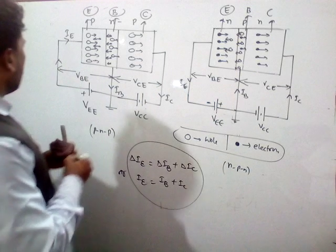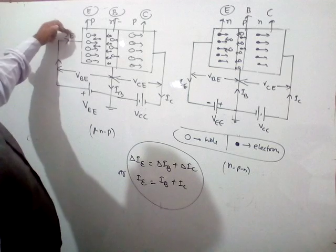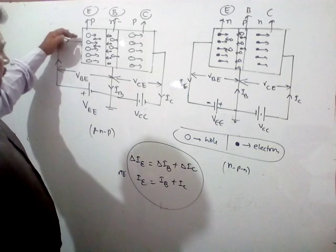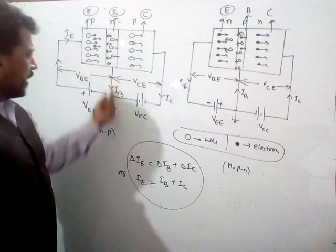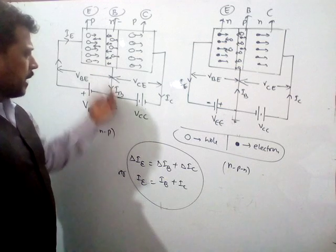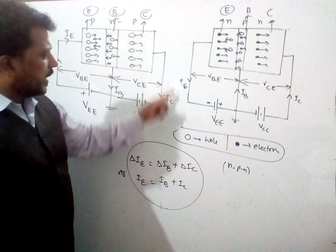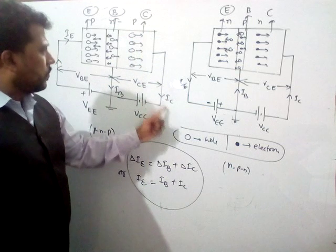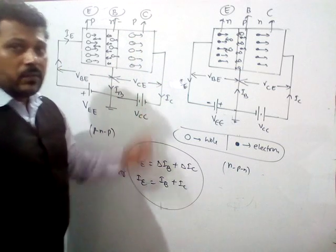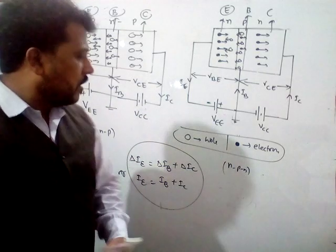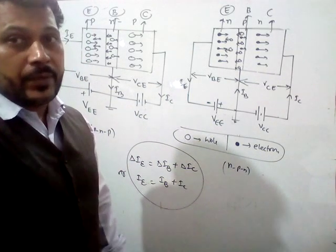So whenever current flows in PNP from the positive terminal to the emitter region, some current IB flows from the base region and some current IC flows from the collector region to the negative terminal of VCC. In this way, we explain the working of PNP and NPN transistors.